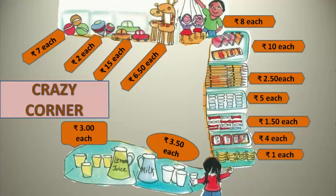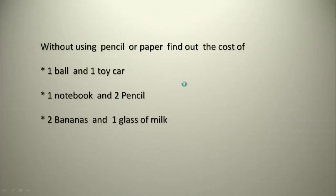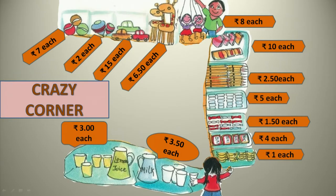Now let's learn about a shop — this is the Crazy Corner shop. It has numerous things: ball, top, toy car, books, pencils, eraser, chocolate, biscuits, banana, milk, and lemon juice. When you go to the shop, you want to buy different things.